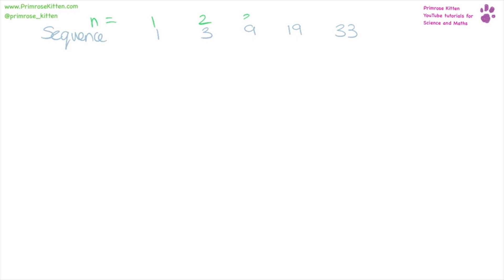Here we have a sequence that I would like you to find the nth term for. The first thing I'm going to do is pop n's up here: n = one, two, three, four, and five. And this is my sequence. So the first thing to do is to work out our differences between each of the terms.